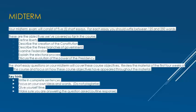These are the objectives we have covered so far in the course: define liberty; describe the creation of the Constitution; describe the three branches of government; examine federalism; explain the electoral process; discuss the evolution of the power of the presidency. The short essay questions on your midterm will be about these course objectives. Review the material of the first four weeks of the course and focus on how these course objectives have appeared throughout the material.